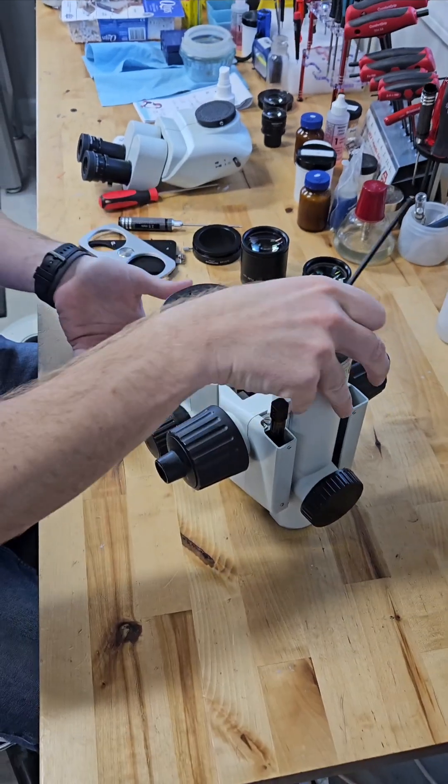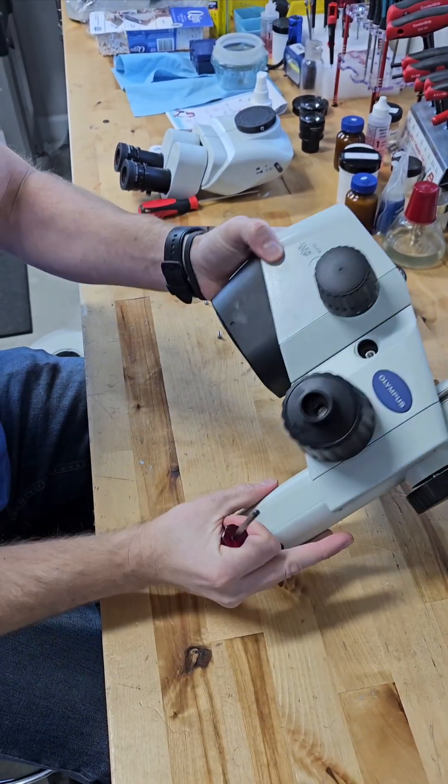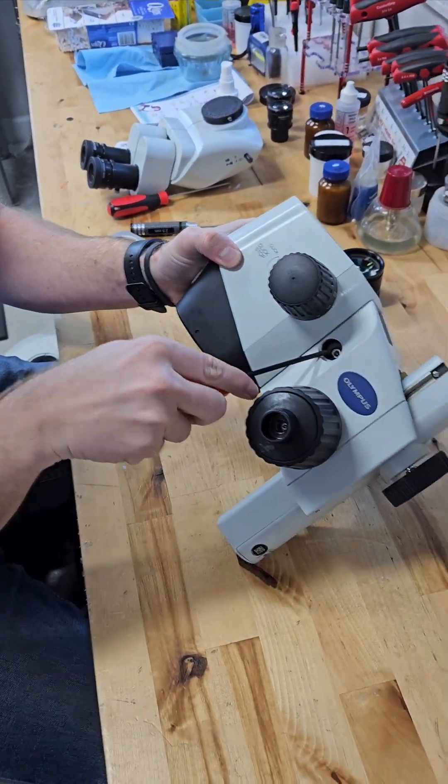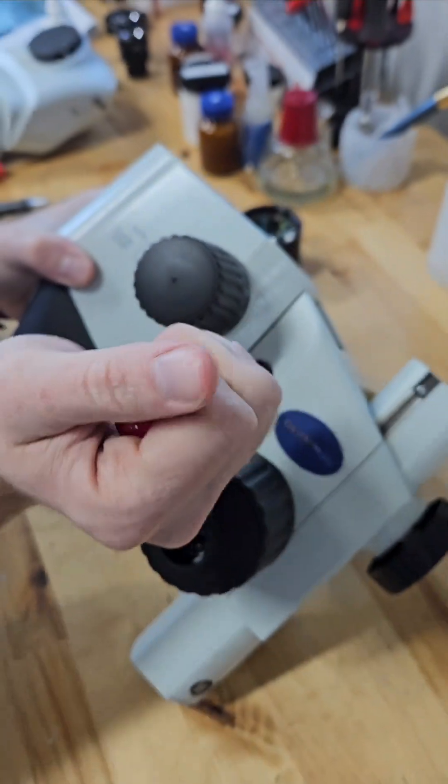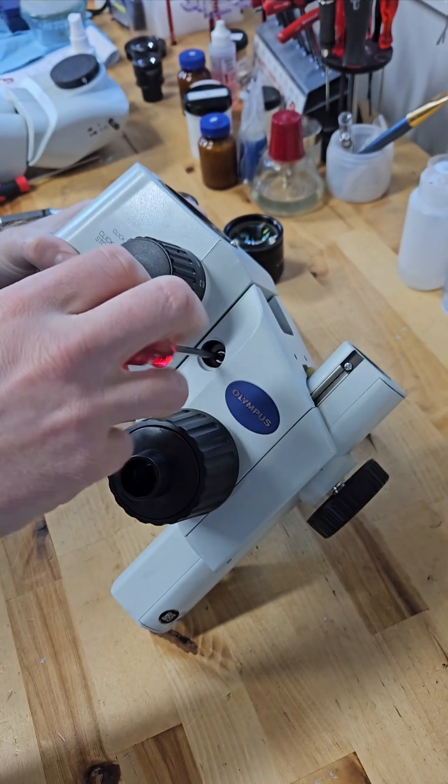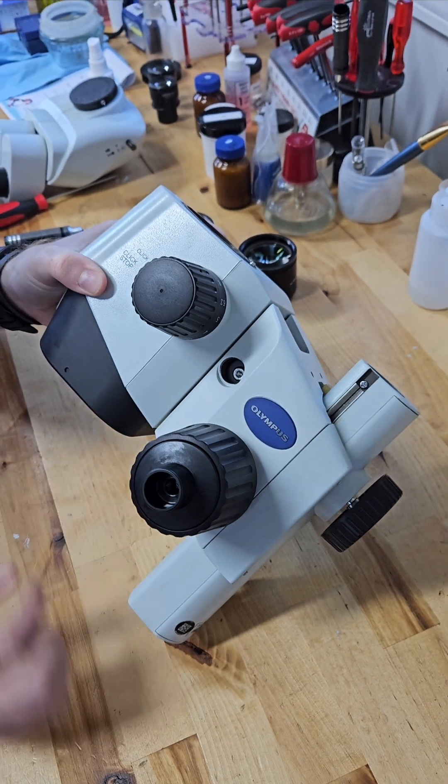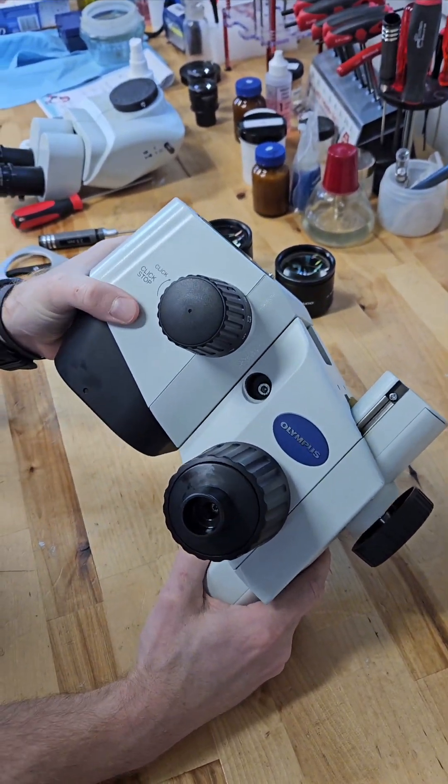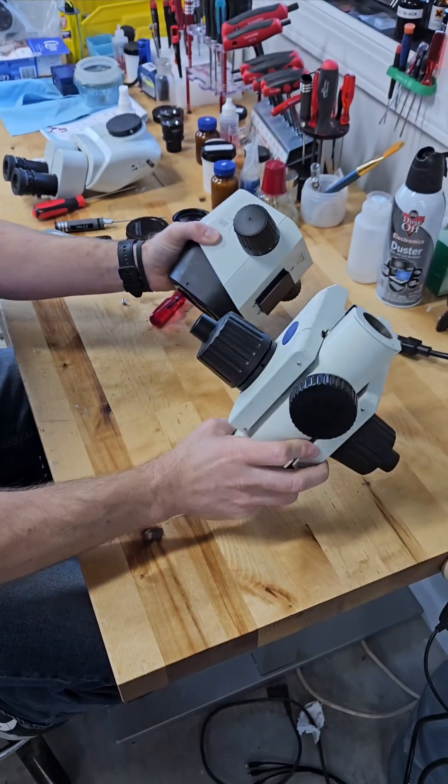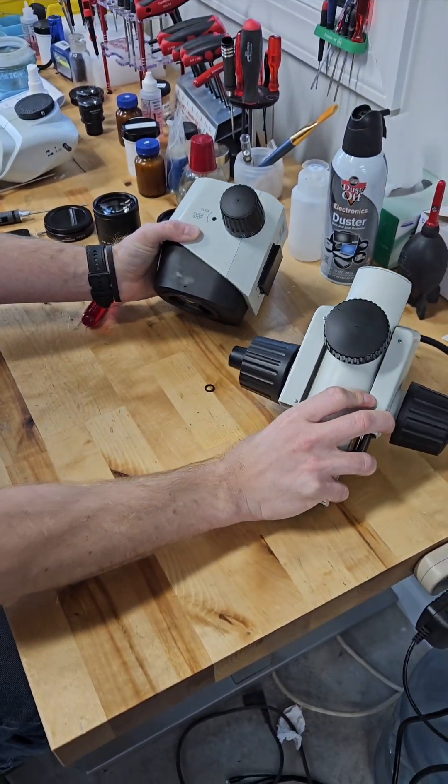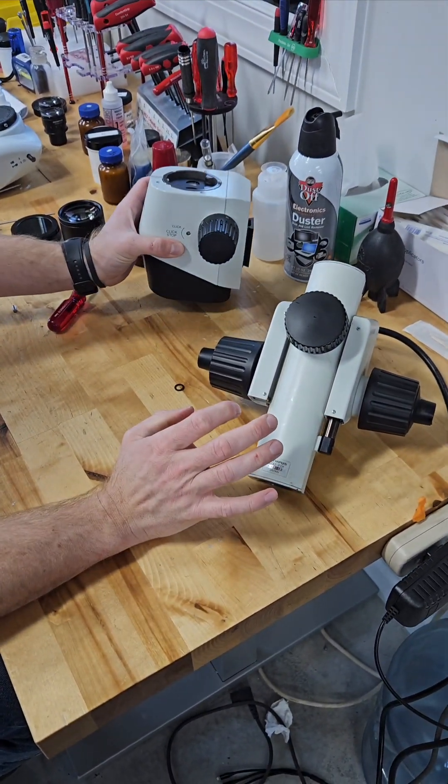You're going to use a 4 millimeter Allen wrench right here. Sometimes there'll be a white cap over this screw. It's going to be on the right side of the focus mount. We had it off for the demonstration. But once you loosen that, this whole microscope comes apart. So once that's apart, you're kind of done taking the microscope apart.